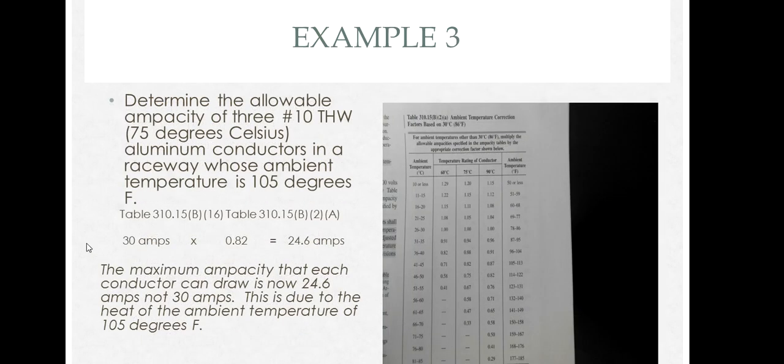The next example is the same thing, except we're using a temperature correction factor. Determine the allowable ampacity of three number 10 TW THW aluminum conductors in this raceway. We get the ampacity from this table, and the factor from Table 310.15(B)(2)(A). We find 105 degrees Fahrenheit, and we're looking for the 75 degree column because it's THW. The intersection is 0.82.